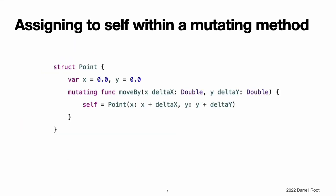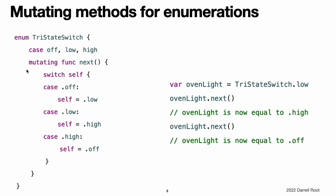Assigning to self within a mutating method. Mutating methods can assign an entirely new instance to the implicit self property. The point example shown above could have been written in this way instead. This version of the mutating moveby method creates a new structure whose x and y values are set to the target location. The end result of calling this alternative version of the method will be exactly the same as for calling the earlier version. Mutating methods for enumerations can set the implicit self parameter to be a different case of the same enumeration. This example defines an enumeration for a three-state switch. The switch cycles between three different power states — off, low, and high — every time its next method is called.